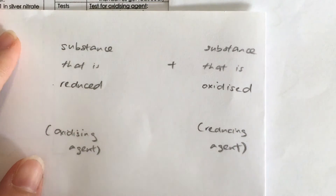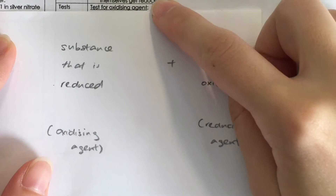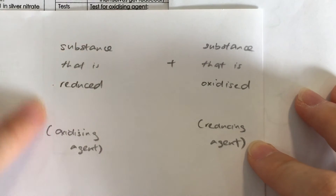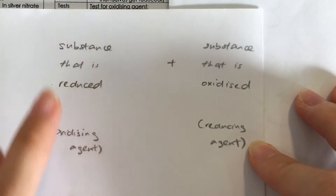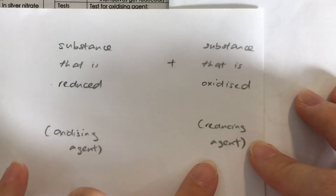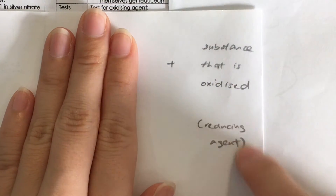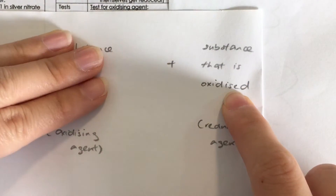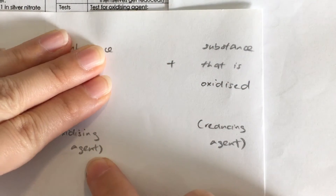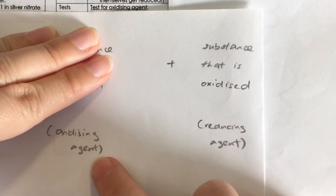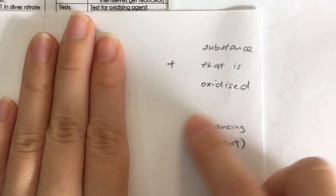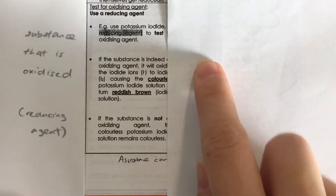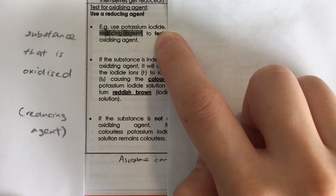So how do we test for an oxidizing agent? If we want to find out if an oxidizing agent is present, it must always take place together with a reducing agent. What we can do is add a reducing agent and see if it gets oxidized, because if it gets oxidized, that means the oxidizing agent is present. So to test for an oxidizing agent, add a reducing agent and observe.